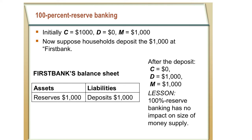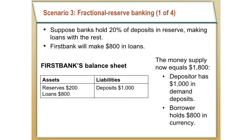Now let's look at the more interesting case of fractional reserve banking. With fractional reserve banking, the bank will not keep all deposits as reserves — they'll use some to generate income. In this example, let's assume they hold 20% of deposits as reserves, so the reserve-to-deposit ratio is 0.2, and they loan out the remaining 80%. 80% of $1,000 is $800, so First Bank makes $800 in loans. The $1,000 liability remains, but on the assets side, the bank keeps $200 as reserves and loans out $800. The money supply is now $1,800.